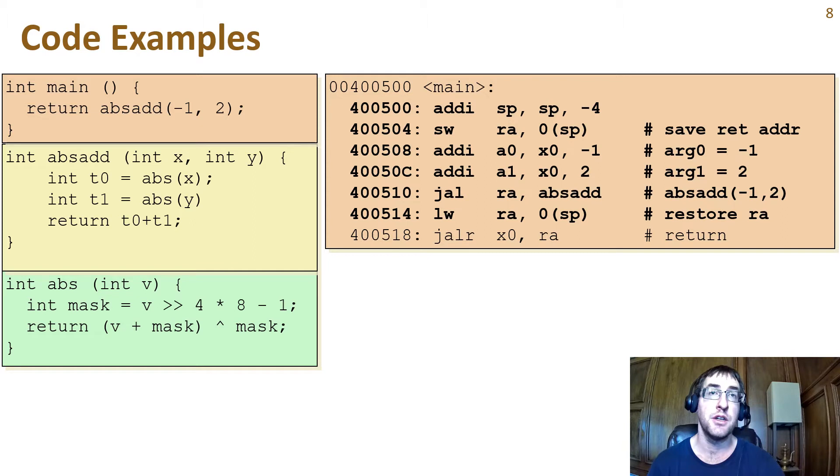Because main is going to return the same value returned by absadd, the return value for main is already in the right register, a0. So the next instruction restores the return address from the stack before returning to it.